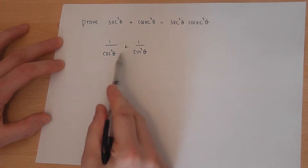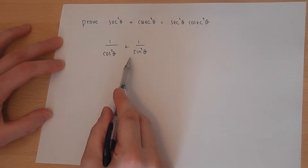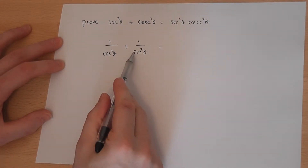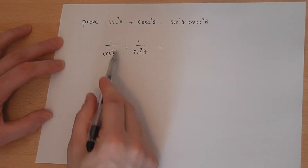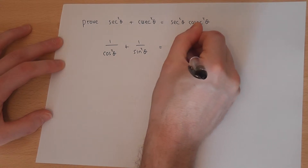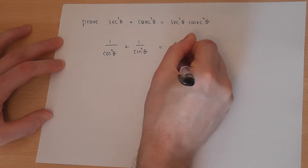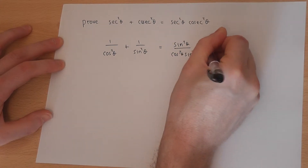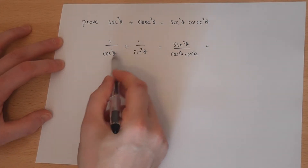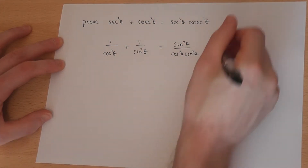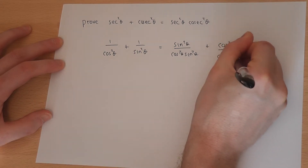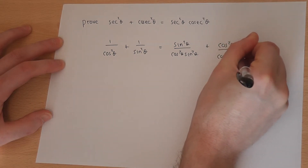To add these two fractions together requires the same denominator. So if I times the left fraction by sine squared, I get sine squared theta over cos squared theta sine squared theta. And I'll times the right fraction by cos squared, so cos squared theta over cos squared theta sine squared theta.